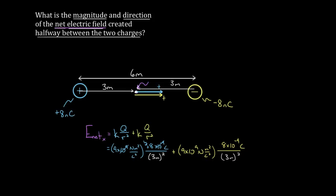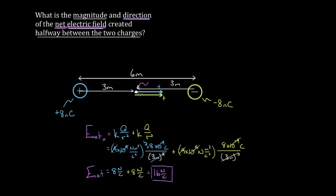Squaring three gives nine, and nine divided by nine is one, so the first term gives eight newtons per coulomb. The second term works out the same way: the nines cancel and the ten-to-the-ninths cancel, leaving eight newtons per coulomb. Adding them gives a total net electric field of sixteen newtons per coulomb, pointing to the right.